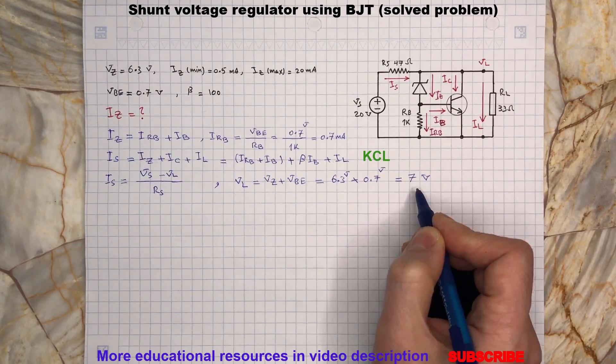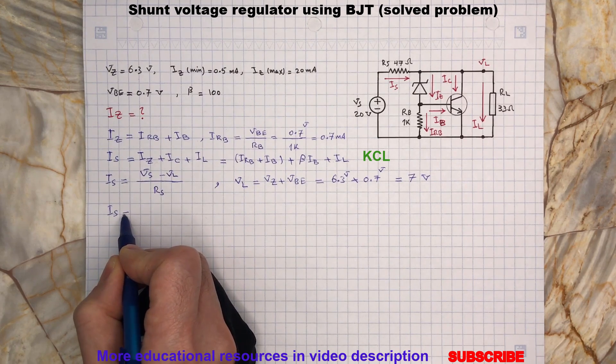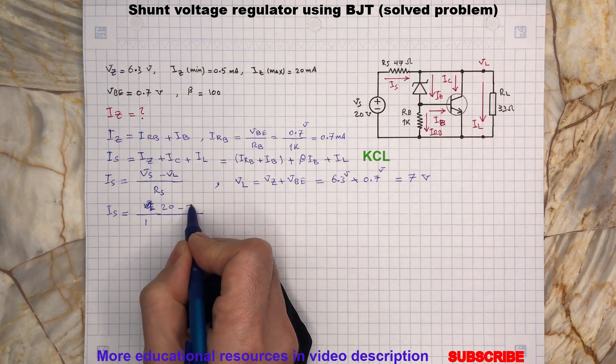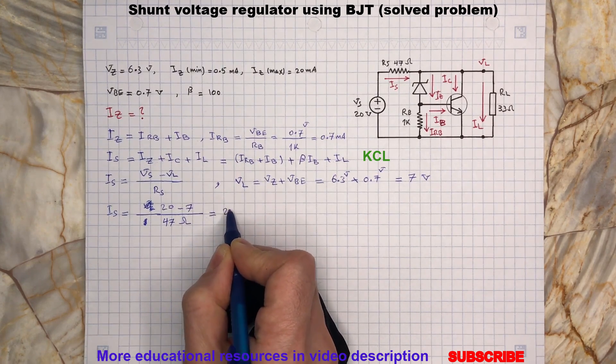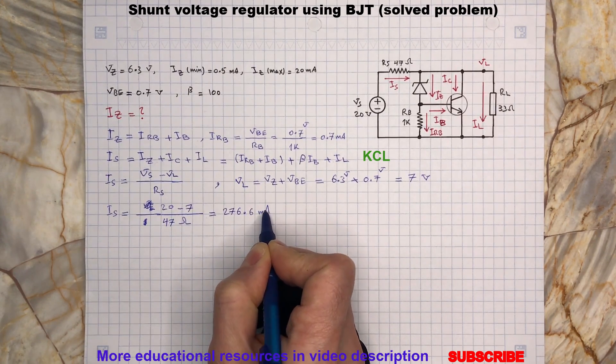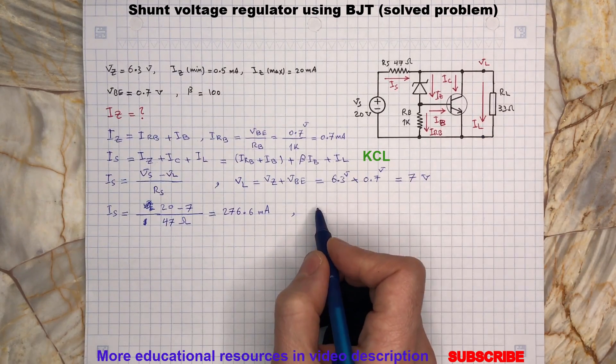KCL for IEB and IIS can be defined. At the same time, current IL will be calculated.